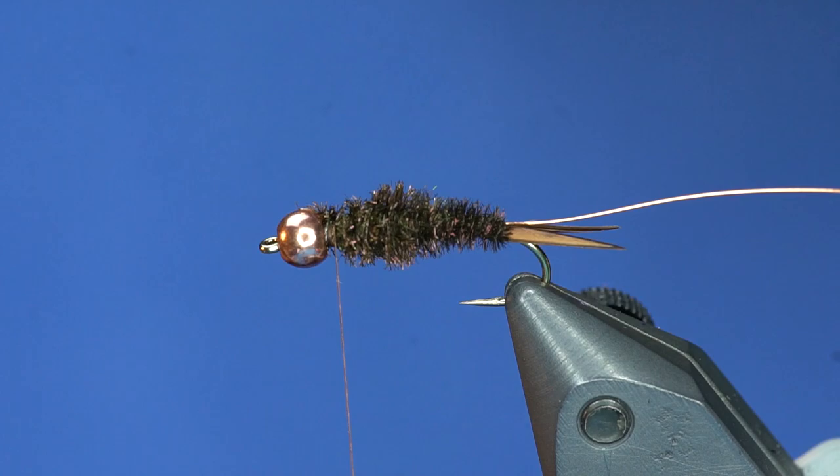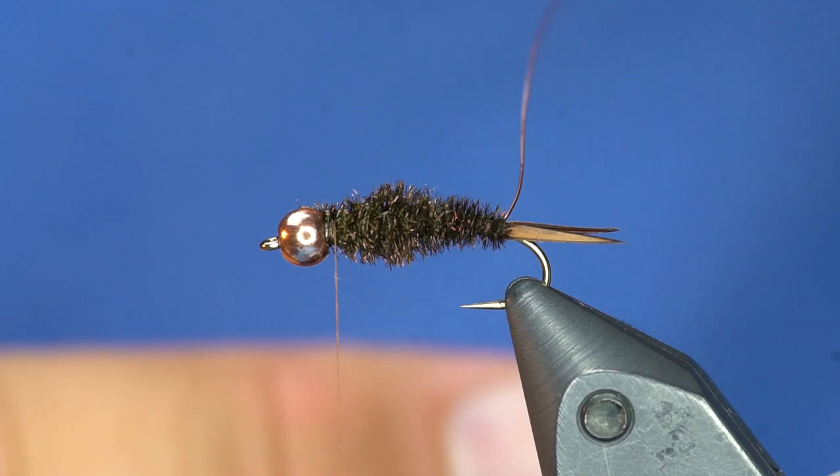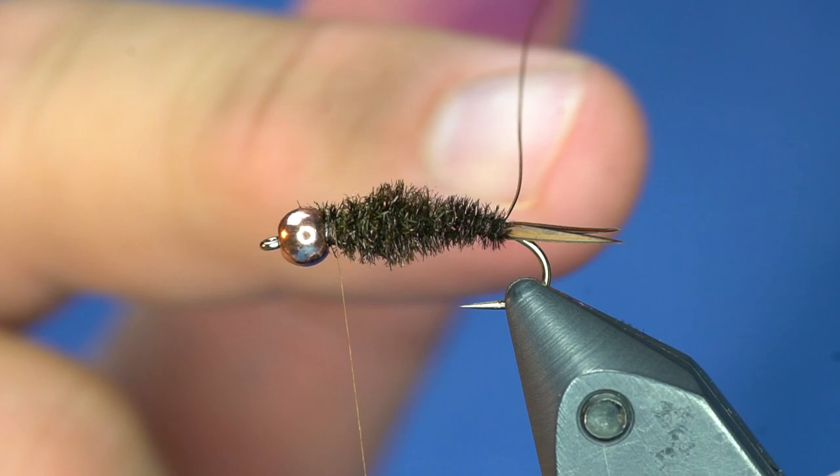Okay so now this is critical. You need to wrap the wire the opposite way. If you wrap the wire the same way as the peacock. As soon as the fish eats that fly and it hits that peacock. It's going to break one of those peacock fibers and it's going to unravel. So if you wrap the wire the opposite way. That's going to trap down those peacock fibers with every wrap. So we wrap that all the way to the front.